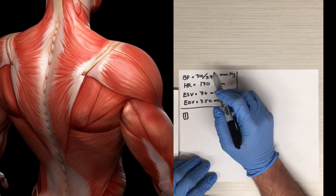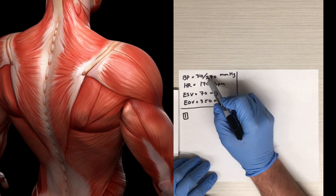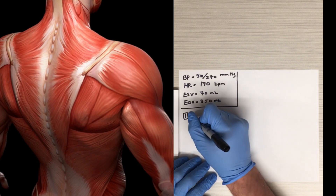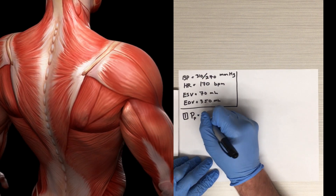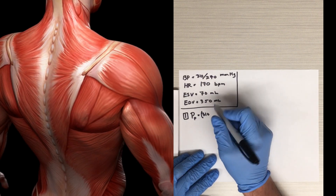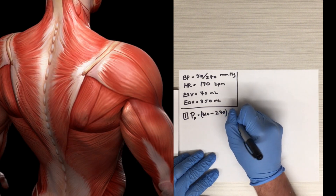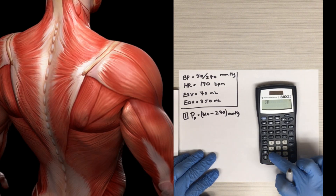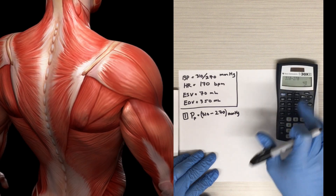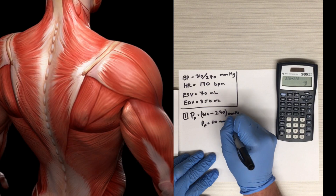The pulse pressure is just the difference between the systolic blood pressure and the diastolic blood pressure. So the pulse pressure would simply be 310 mmHg minus 270 mmHg — 310 minus 270 — and this gives us a pulse pressure of 40 millimeters of mercury.